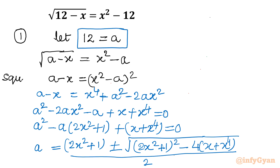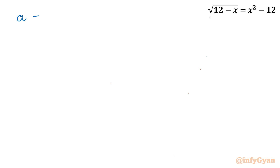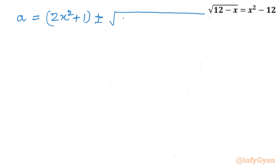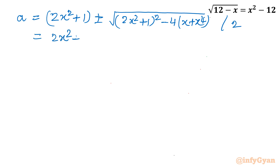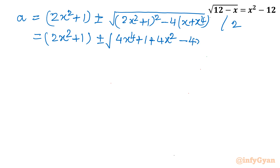Remember that a equals 12, and we will put this value at the end. Let us simplify: a equals (2x squared plus 1) plus or minus square root of (2x squared plus 1) whole square minus 4 times (x plus x to the power 4), all divided by 2. Expanding: that is 4x to the power 4 plus 1 plus 4x squared, minus 4x minus 4x to the power 4, divided by 2.